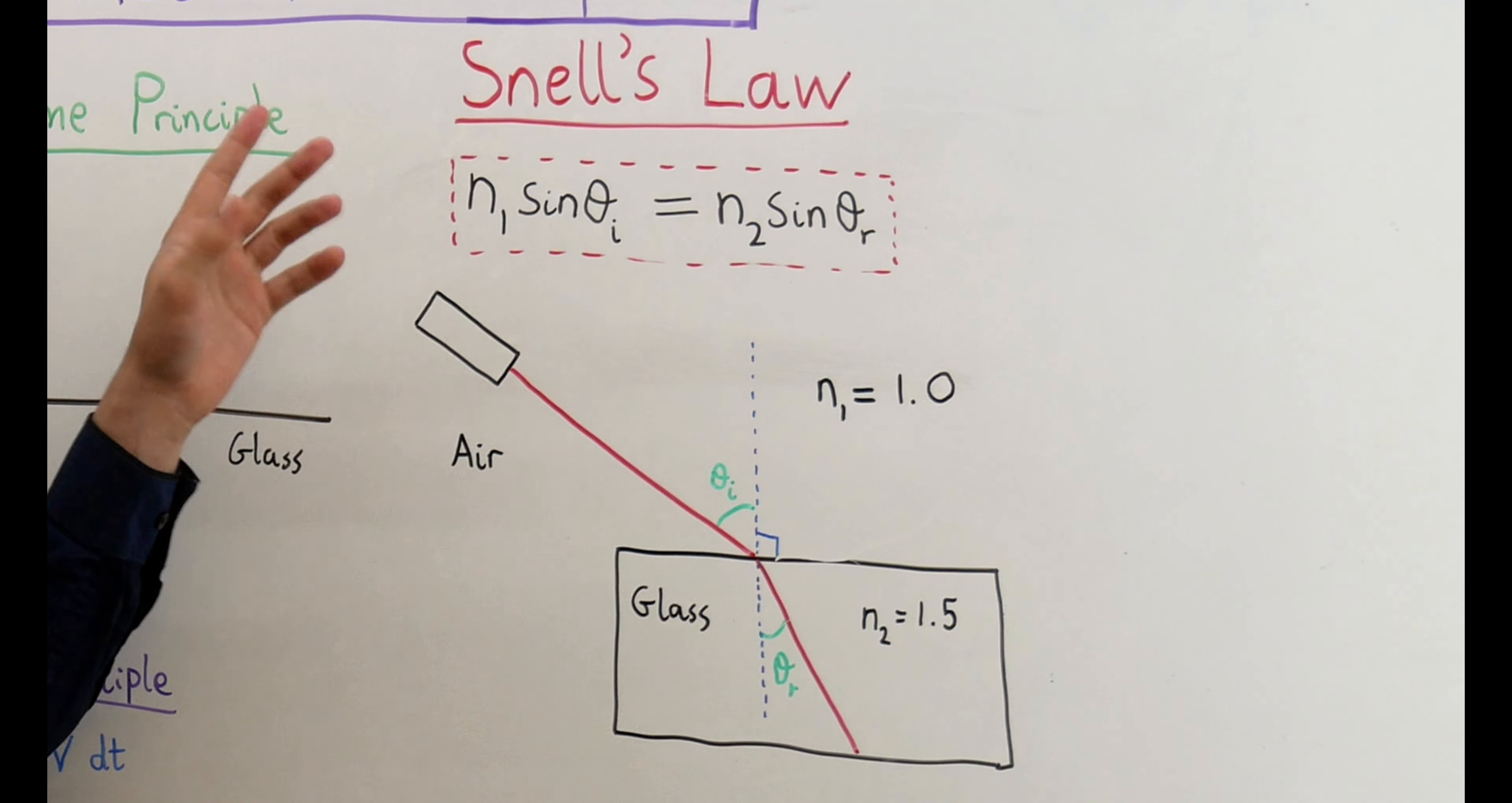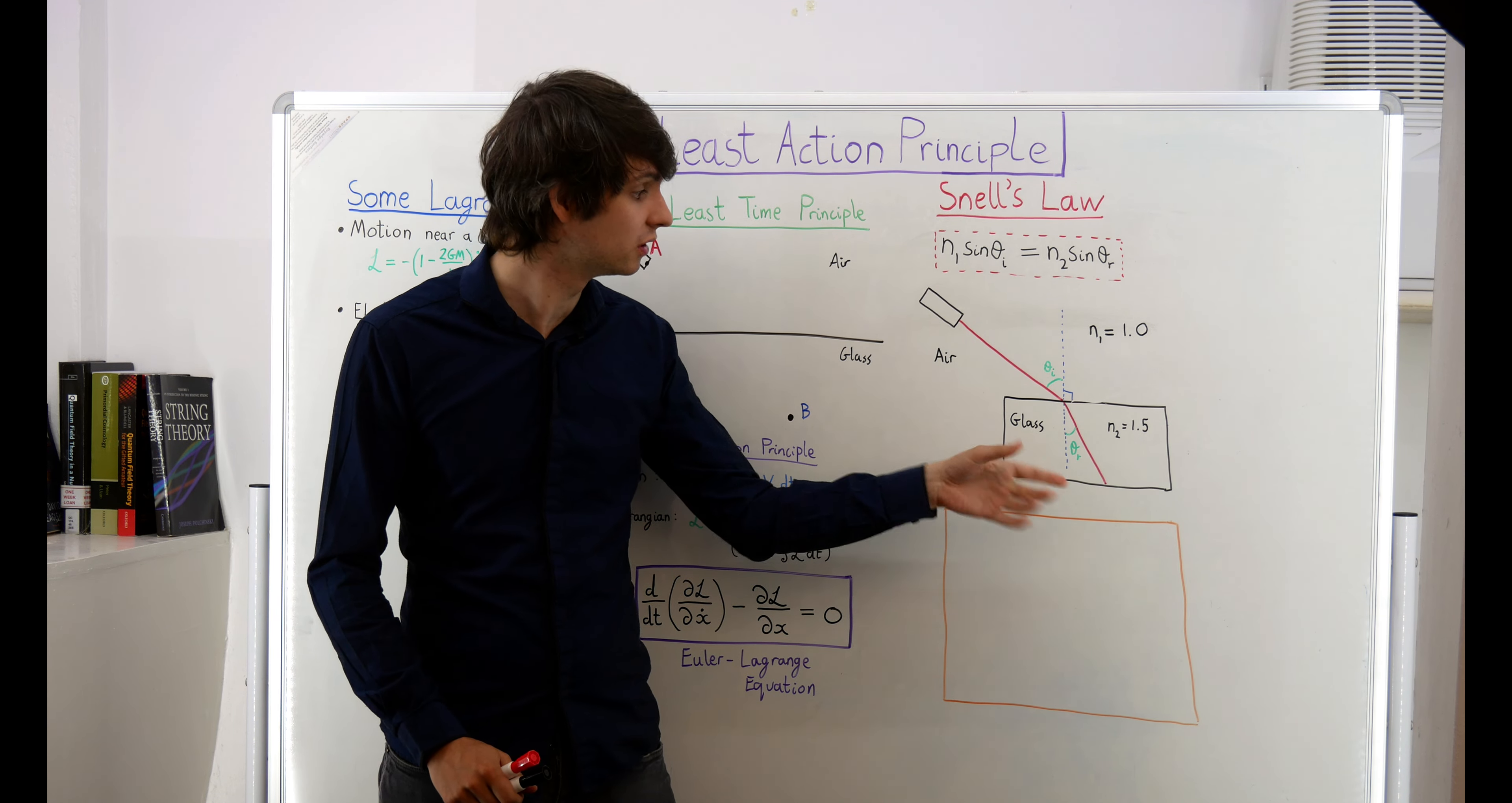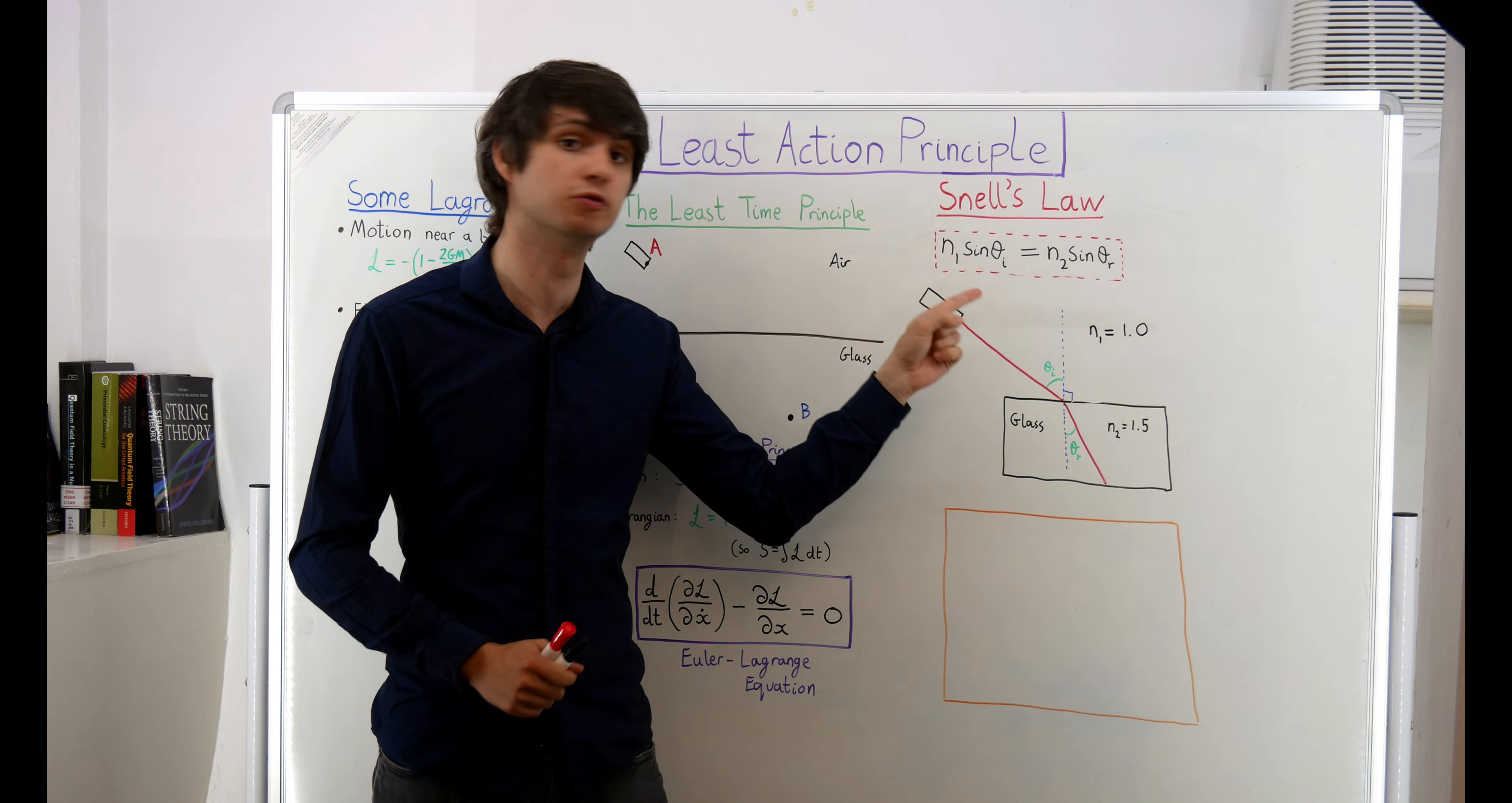The refractive index of the first medium times the sine of the angle of incidence, which is the angle between the light ray and the perpendicular to the boundary, is equal to the refractive index of the second medium times the sine of the angle of refraction, which is the angle between the light ray after it's refracted and the perpendicular to the boundary. This law was originally derived empirically simply by measuring the angle of incidence and angle of refraction in different setups and finding a mathematical relationship that accurately described what was seen in experiments.